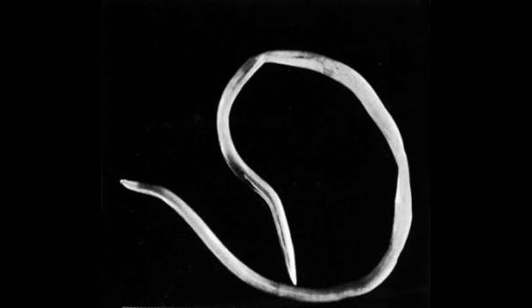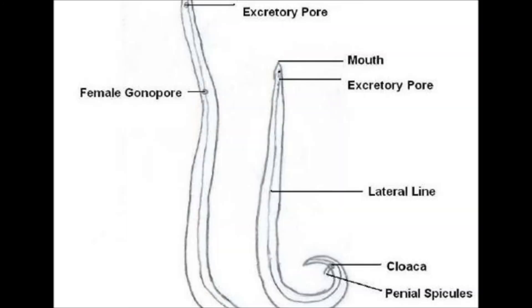In the female, the genital aperture is present in the mid-ventral line at about one third of the length from the anterior end. In the male, from the cloaca, two equal cutaneous spicules project which help in copulation.